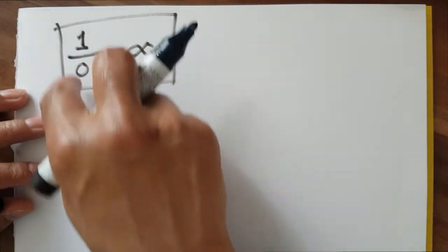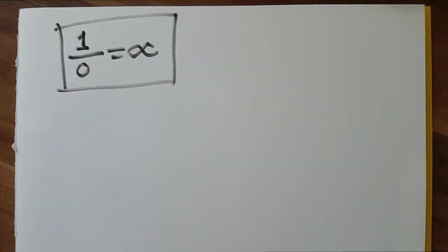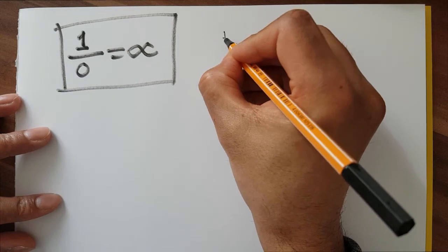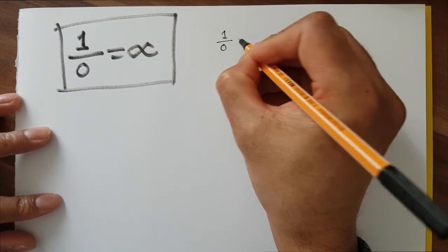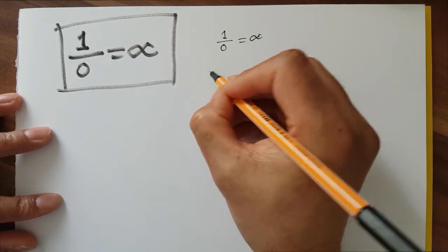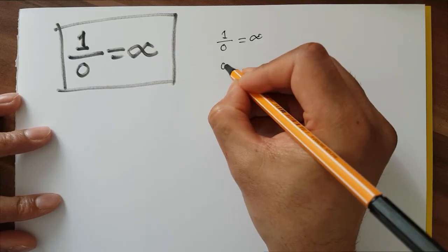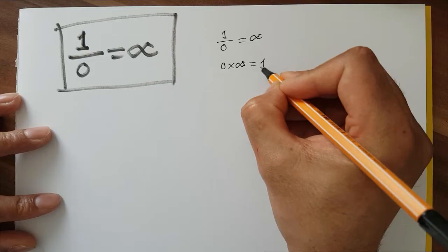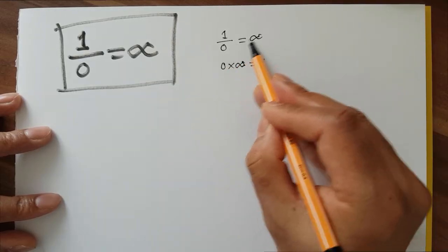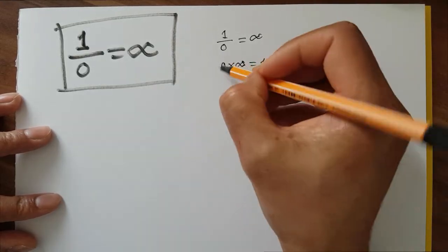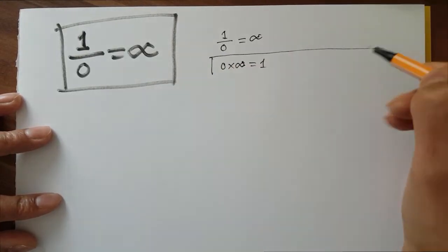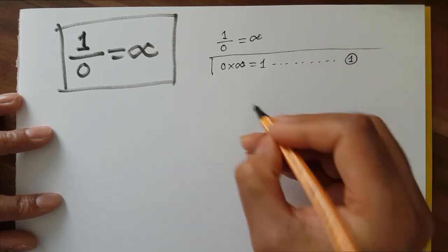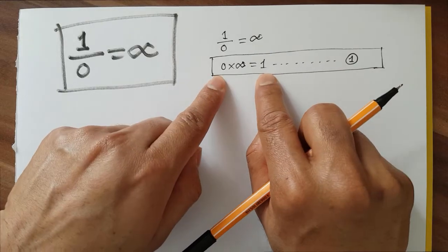Now I'm going to have a fun with this mathematical equation — I call it the fun of mathematics. My main equation is 1 over 0 is equal to infinity. What does it mean? It means 0 times infinity is equal to 1, because 0 multiplied with infinity becomes 1. Let's call this equation 1.